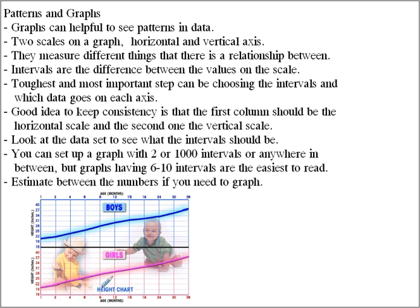To keep consistency — and I'll show an example in the next graph — it's a good idea that the first column should be the horizontal scale and the second column should be the vertical scale when you have a data set. Look at the data to determine what the intervals should be; aim for about 6 to 10 intervals, which makes it easier to read.